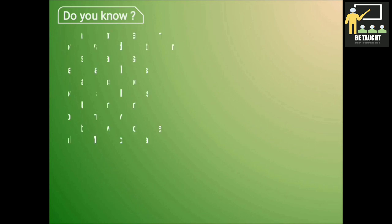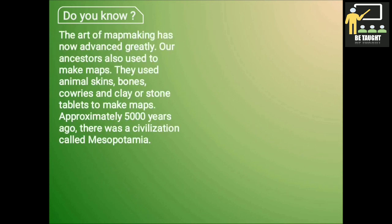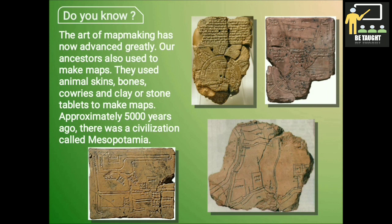Children, do you know the art of map making has now advanced greatly? Our ancestors also used to make maps. They used animal skins, bones, cowries and clay or stone tablets to make maps, as you can see in the picture. Approximately 5000 years ago there was a civilization called Mesopotamia. A clay tablet was used by this civilization to draw or to make a map.